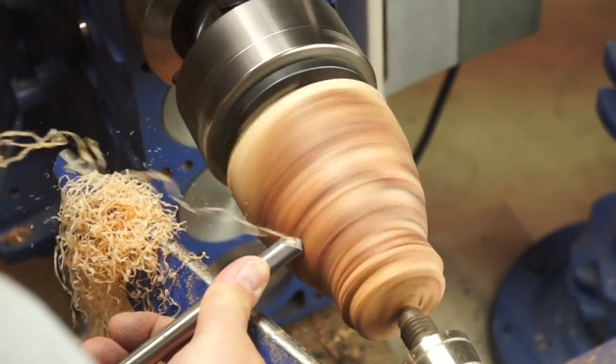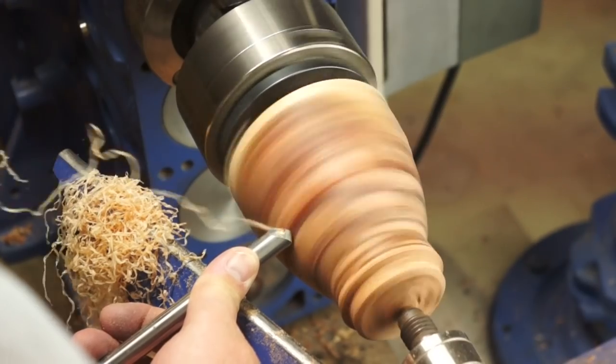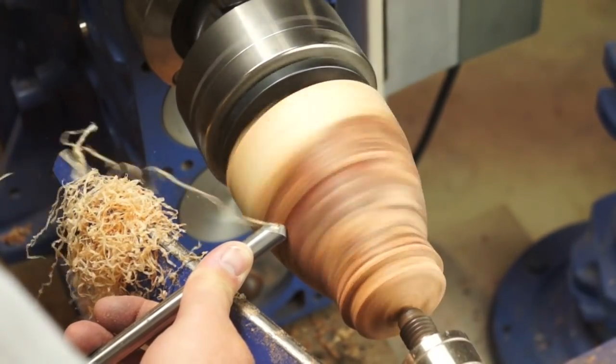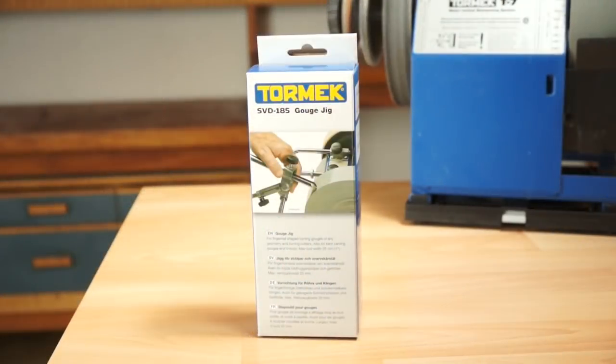Woodturners around the world have discovered that the side grind gouge dramatically improves their turning, but maintaining that shape consistently by hand is a huge challenge. The SVD-185 makes the task very simple, whether you turn once in a while or every day. Your tools will cut better and last longer. If you've got a Tormek and a lathe, you don't want to be without this jig.